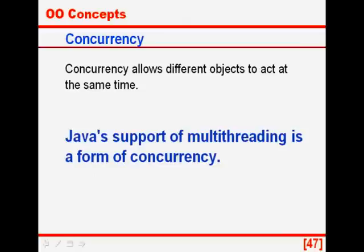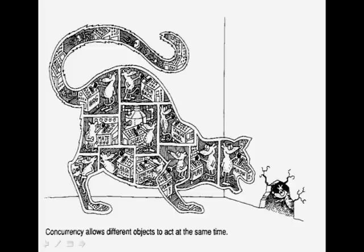Another feature is concurrency: concurrency allows different objects to act at the same time. An example is Java's support of multithreading, which is a form of concurrency — different objects acting at the same time.